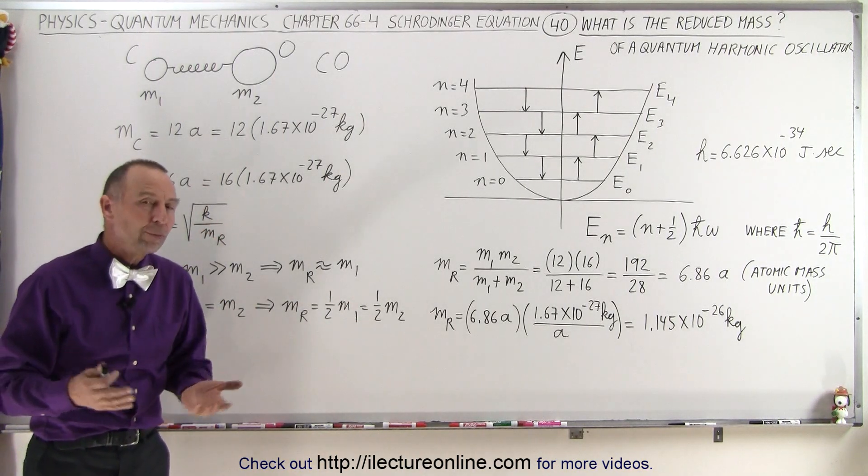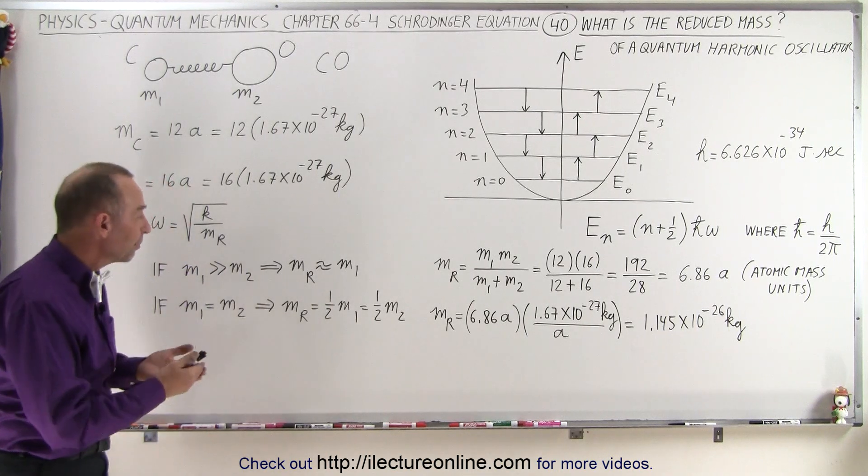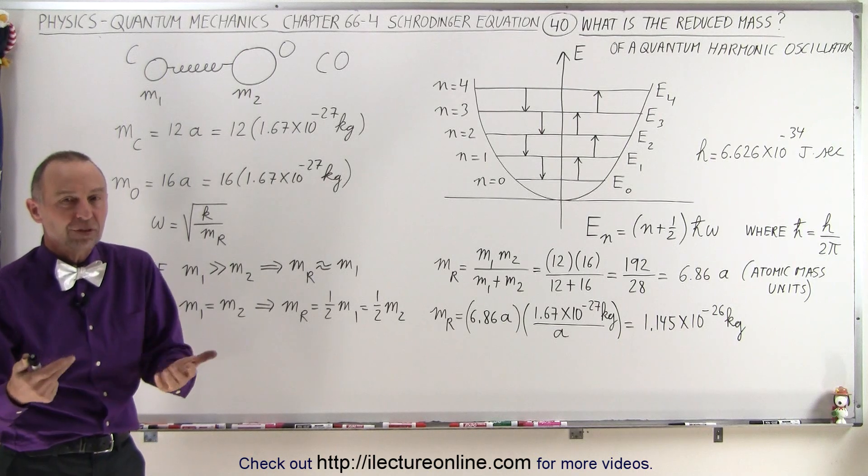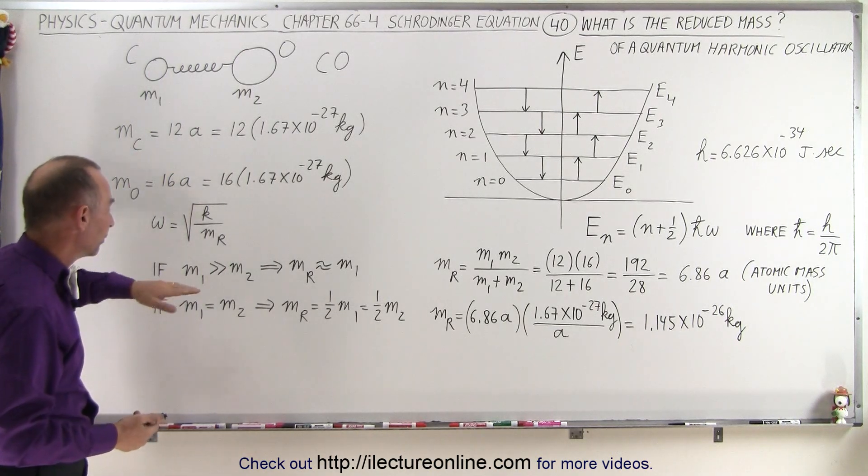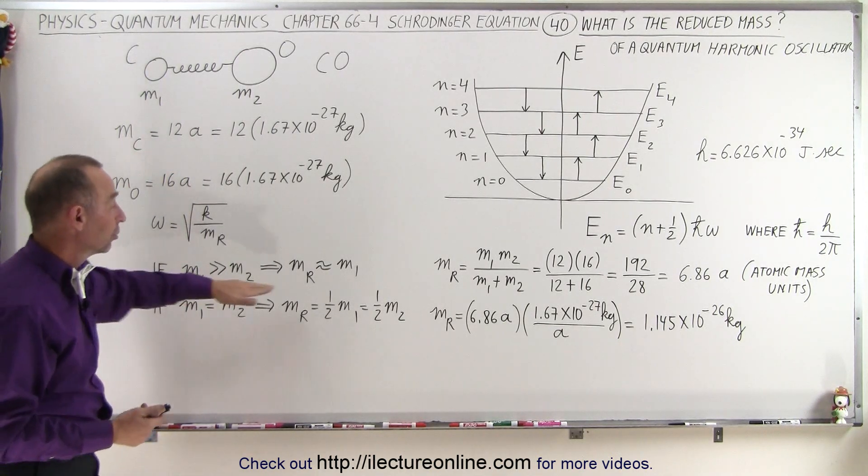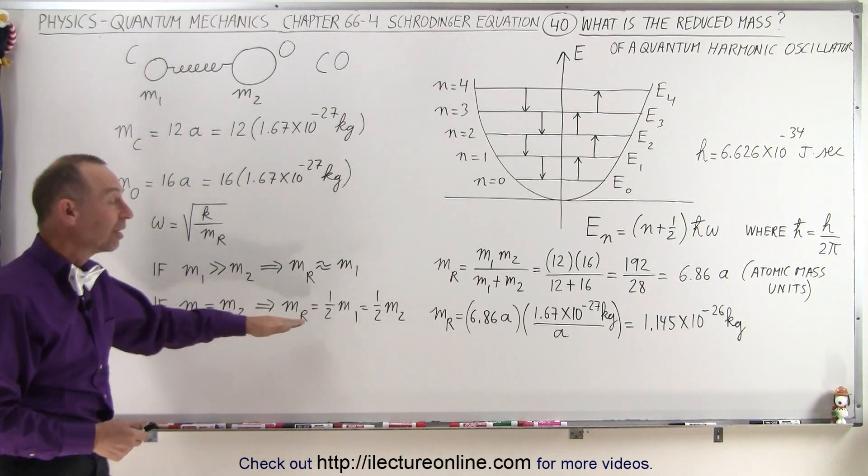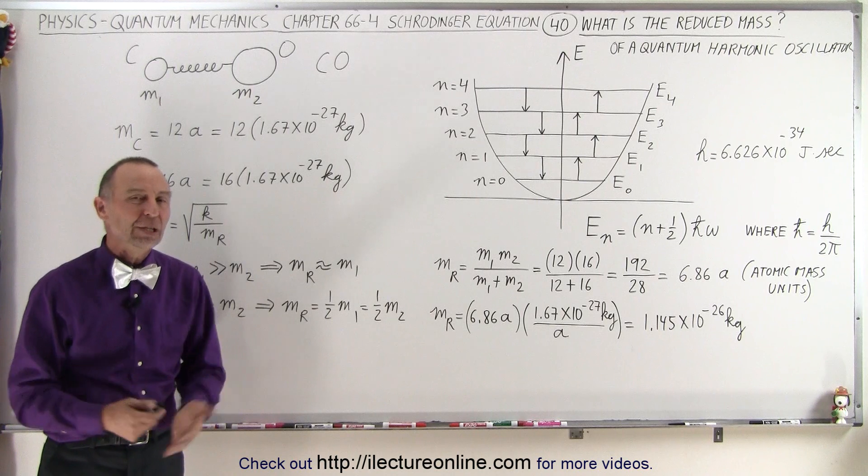So in conclusion, the reduced mass is simply a ratio of the masses of the two atoms in an oscillator, for example, a diatomic molecule. If one is much larger, the reduced mass is very nearly the larger one. If they're equal in size, then it's simply half the mass of either one of them.